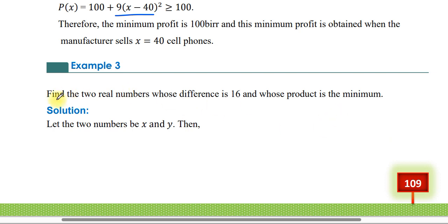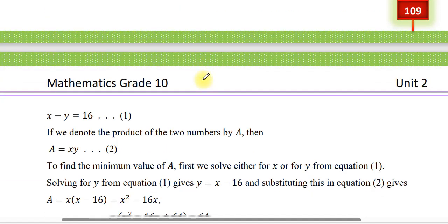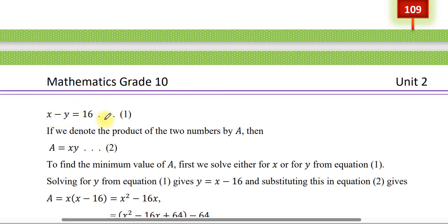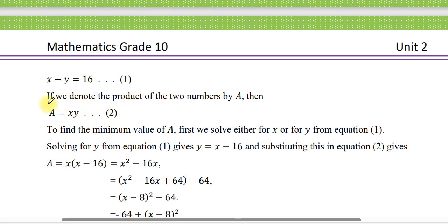Example 3: Find two numbers whose difference is 16 and whose product is minimum. Solution: Let the two numbers be X and Y. The difference is X minus Y = 16. Let the product be A = XY. To find the minimum value of A, first solve for Y from equation 1: Y = X minus 16.